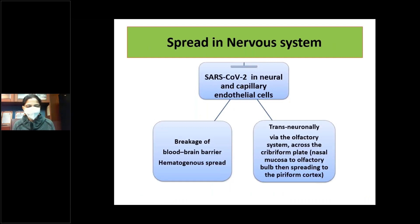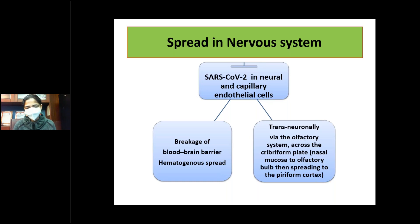This presentation focuses on the nervous system. The reason for neurological involvement is thought to be either the breakdown of the blood-brain barrier leading to hematogenous spread, or trans-neuronal spread using the olfactory system, where the virus may cross through the cribriform plate and reach the brain.